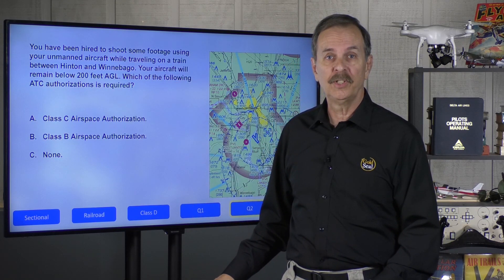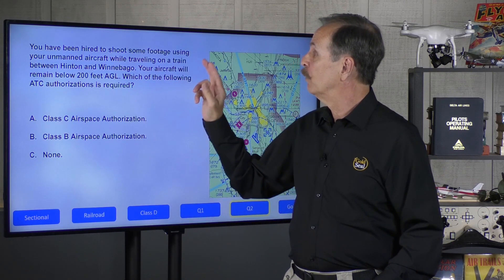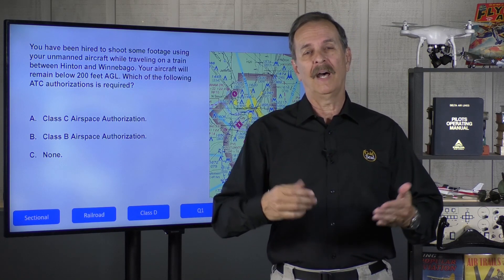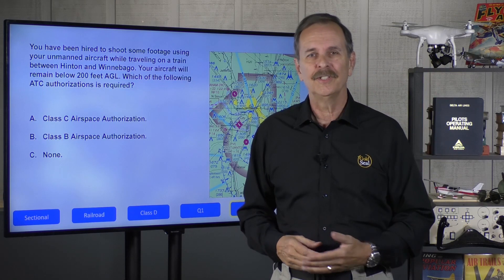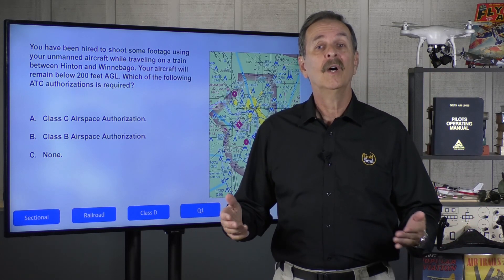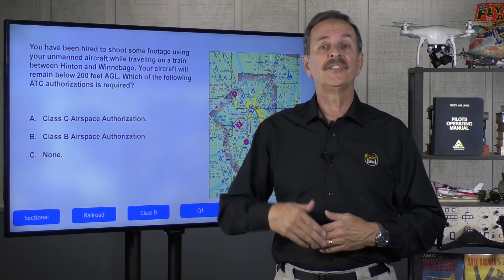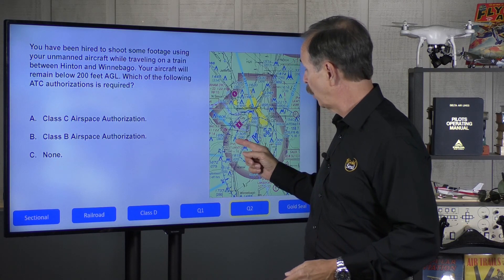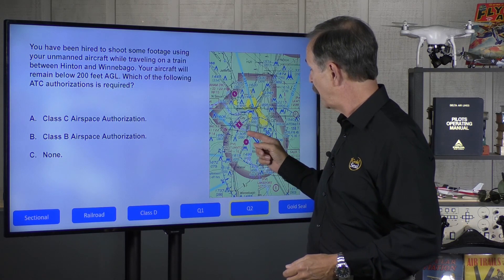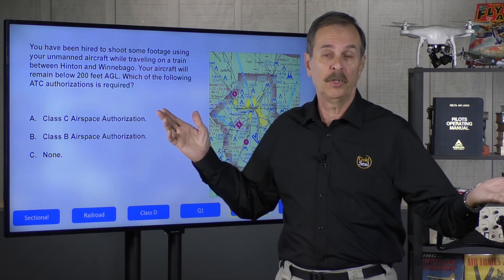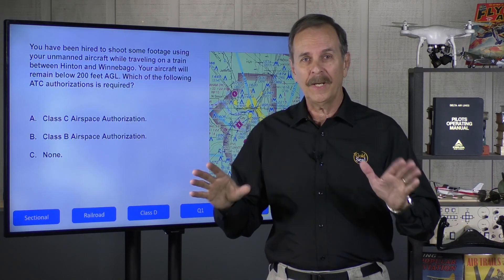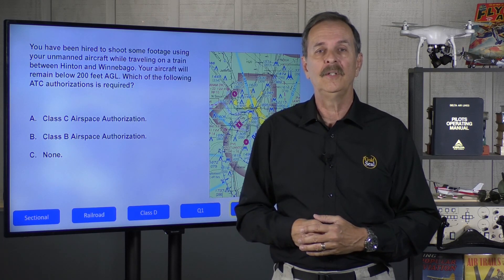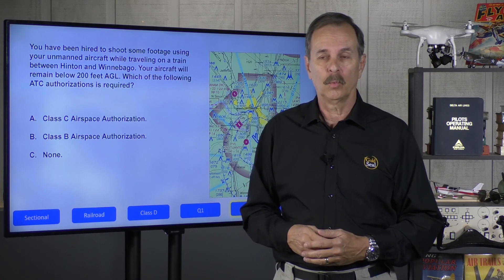Let me point out one other thing about this question. It refers to flying your UAS from a moving train, and a lot of people are thrown off by that because they remember a regulation saying you can't fly from a moving vehicle. Well, the regulation is there, but it does say unless you're over a sparsely populated area. If we look on the sectional chart, right inside the Class Delta, the train tracks go through a sparsely populated area. So the train and train track detail is just there to throw you off — it's a distractor. Don't let it take you down the wrong road.